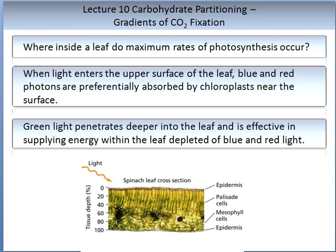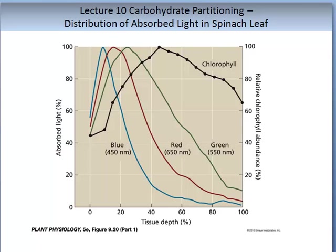Where inside a leaf do the maximum rates of photosynthesis occur? Light enters the upper surface of the leaf. Blue and red photons are preferentially absorbed by chloroplasts near the surface, while green photons penetrate deeper into the leaf and are effective in supplying energy within the leaf depleted of blue and red light. The figure on the screen describes the efficiency of light absorption at different wavelengths, showing that different wavelengths are absorbed at different depths in the plant tissue.